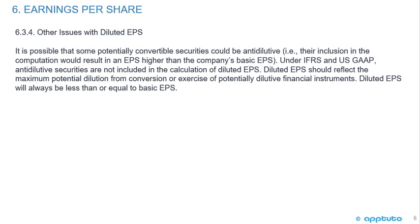Other issues with diluted earnings per share: some potentially convertible securities could be anti-dilutive, meaning their inclusion would result in an EPS higher than basic EPS. Under both IFRS and US GAAP, anti-dilutive securities are not included in the calculation of diluted EPS. Diluted EPS should reflect the maximum potential dilution, and will always be less than or equal to basic EPS.